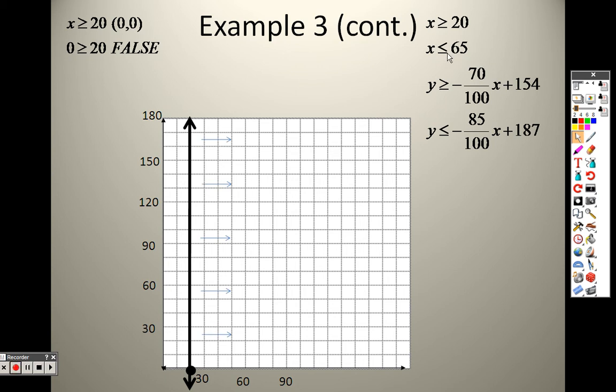Next up is x is less than or equal to 65. There's where 65 would be. I draw that line straight up and down, and 0, 0 is not on the line. So I pick that, and I realize that's true, right? 0 is less than 65. So I shade towards the point. As of right now, I can already tell you that the answer is going to be in that area between those two lines.